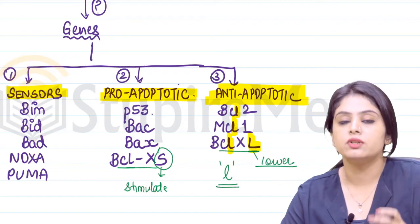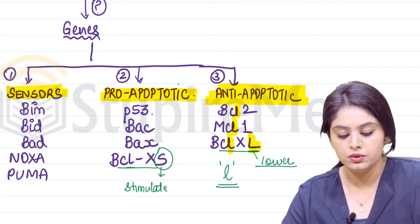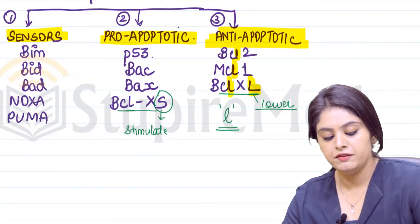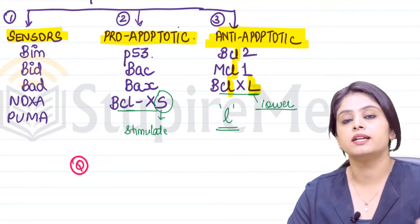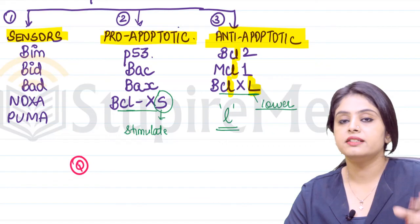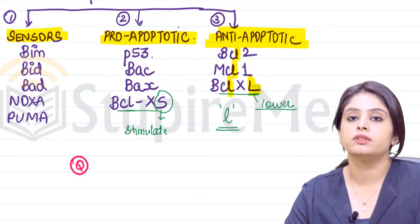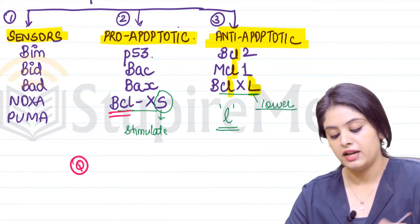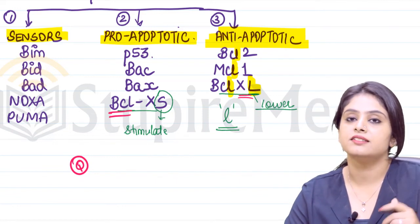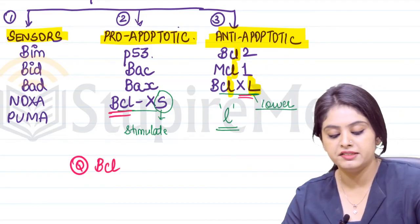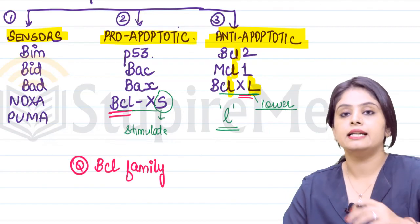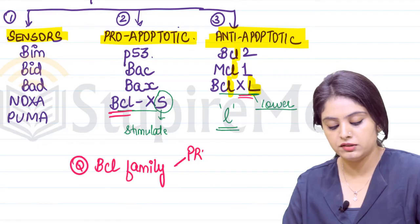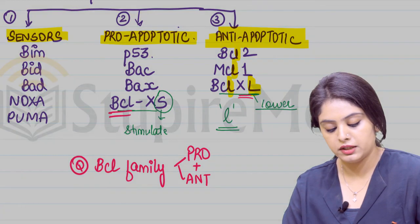Also, one question from this list: which is both pro-apoptotic and anti-apoptotic? You can see there's one molecule in both lists. For pro-apoptotic it's BCL-XS, for anti-apoptotic it's BCL-XL. So the entire BCL family can be both pro-apoptotic as well as anti-apoptotic.